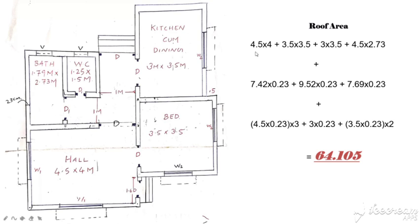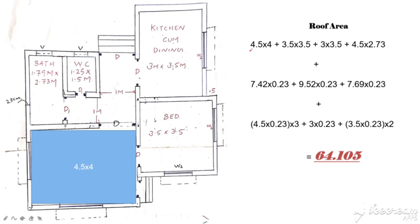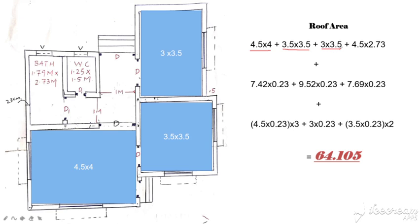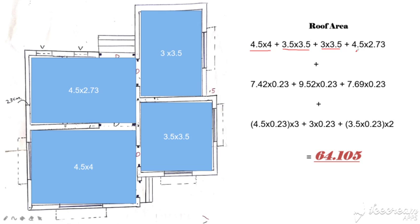I am going to take the inner area — that is, the rooms. Room area is 4.5 by 4. The hall area is the same. The bedroom area is 3.5 by 3.5. The kitchen area is 3 by 3.5. The most part of the area is 4.5 by 2.73. I will separate the inner areas of the rooms.